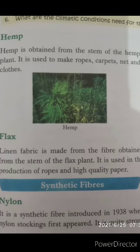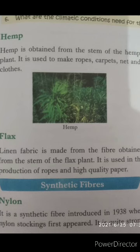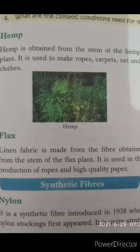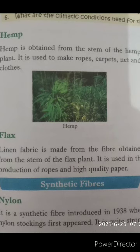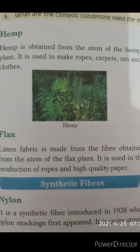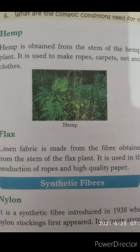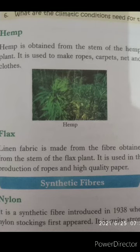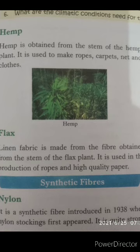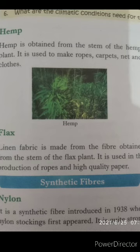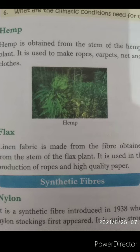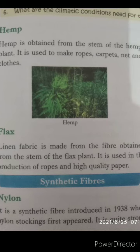Next one: flax. Linen fabric is made from the fiber obtained from the stem of the flax plant. From this flax plant, linen is made — one kind of fiber. It is used in the production of ropes and high quality paper.